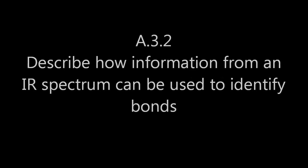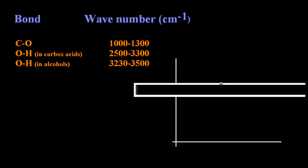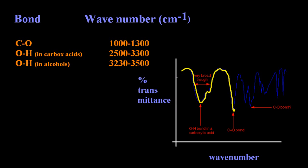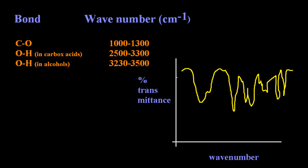Okay, describe how information from an infrared spectrum can be used to identify bonds. Well, you're going to be looking up in the data booklet that the IB is going to give you, and they might give you an infrared spectra like this: transmittance versus wave number.